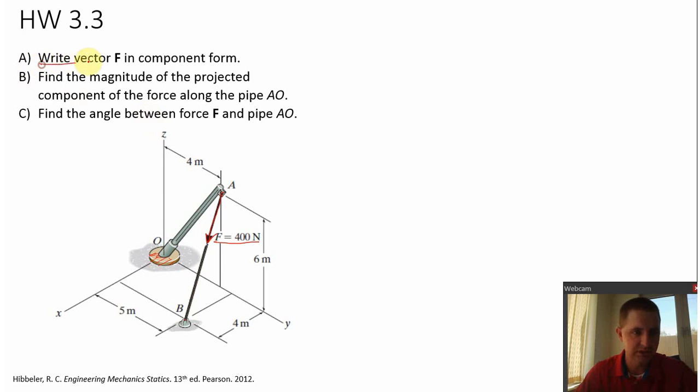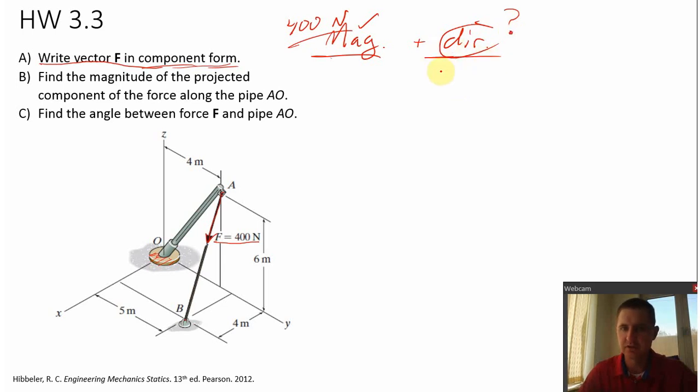Part A simply asks us to write vector F in component form. Now, hopefully you know that a vector, you need two things to define it. You need the magnitude and the direction. Well, we're given the magnitude, that's the 400 newtons there. So how can we find the direction? If we can find the direction, then we can write the vector F in component form. Because if you recall, you can write a vector in the form of its magnitude times a unit vector in the direction of the vector.